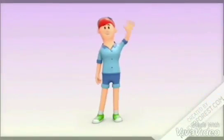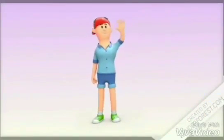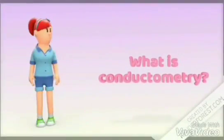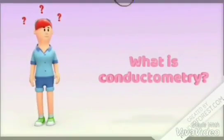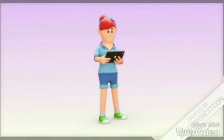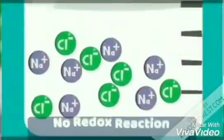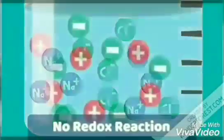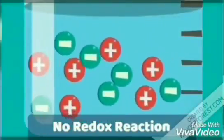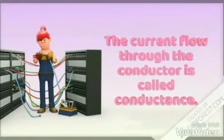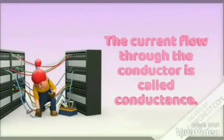Hello everyone, now we are going to talk about Conductometry. Conductometry is the measurement of electrical conductivity of a solution. This method mainly depends on Ohm's law. It is the movement of ions in the electrolytes without the appearance of redox action on the electrode surface. The current flow through the conductor is called Conductance. Conductance is measured by Siemens, which is the reciprocal of ohms, ohms⁻¹.